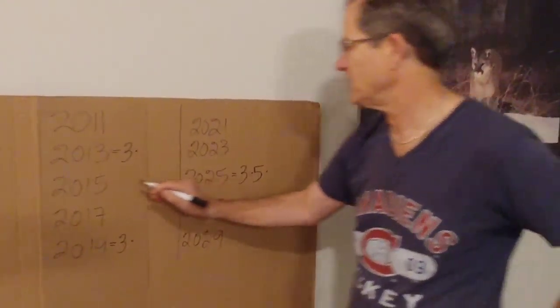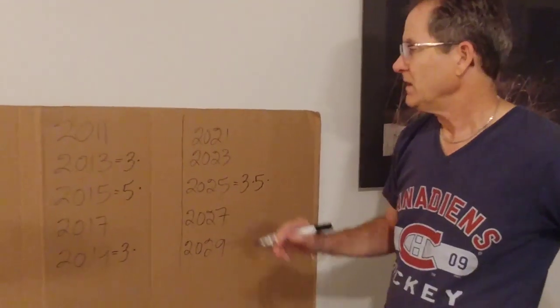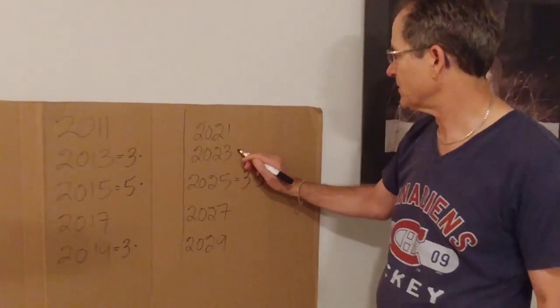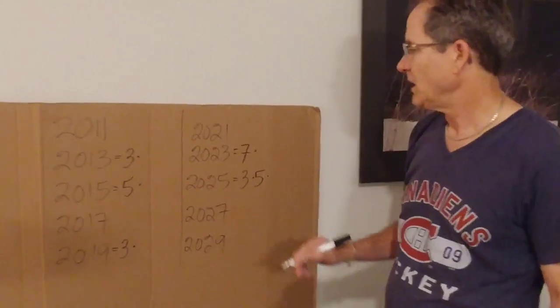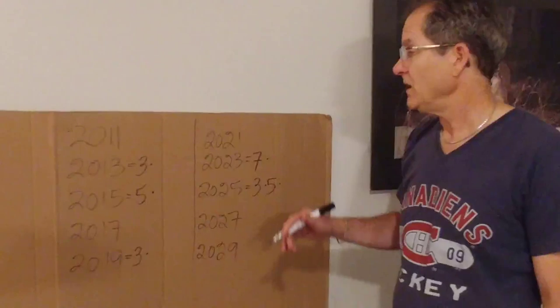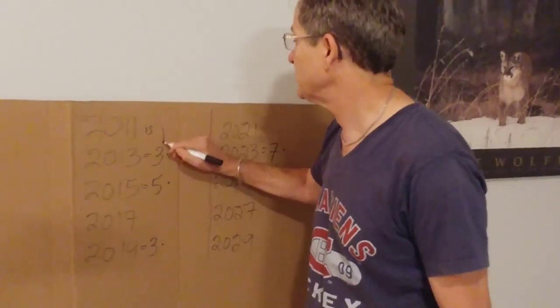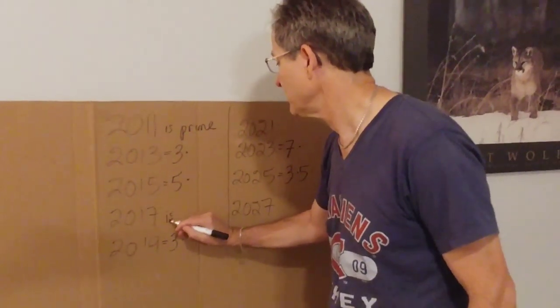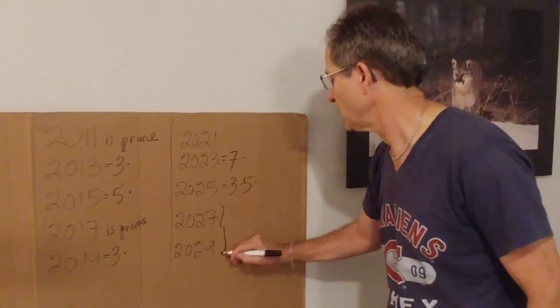If you divide by seven, you'll notice that the only number that's divisible by seven on that list is 2023. And then you can keep dividing by every increasing prime number. If you do that, you'll find out that 2011 is prime, 2017 is prime, and both of these are prime.